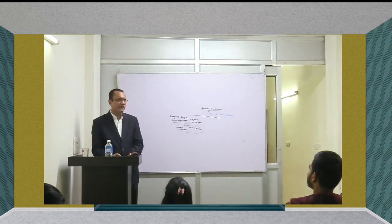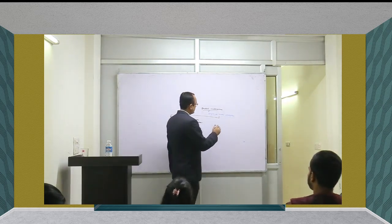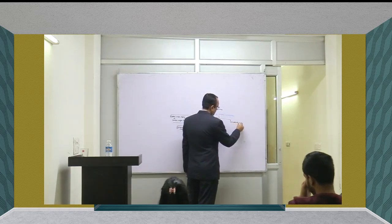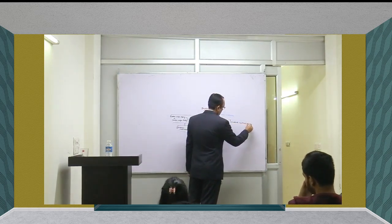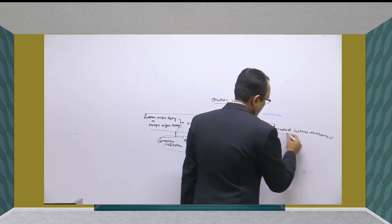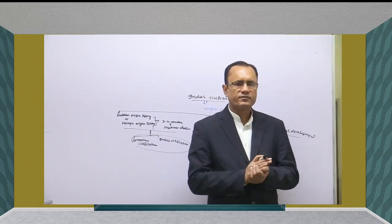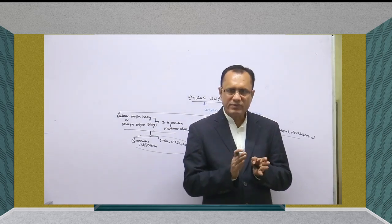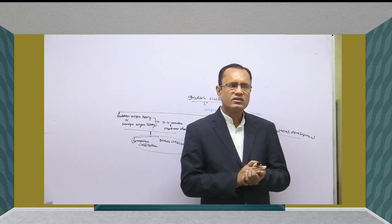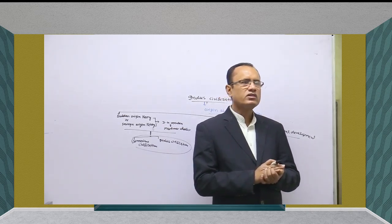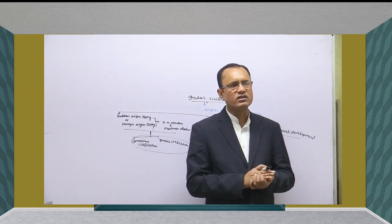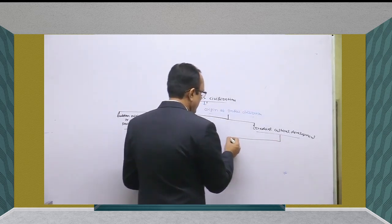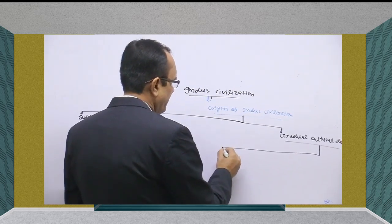So basically, both civilizations have fundamental differences. On the basis of that, scholars proposed that there was a gradual cultural development in the Indus region by indigenous people through the development of their own technological advancement. So Indus civilization originated from indigenous people through gradual cultural development — it was the product of gradual cultural development. For understanding this, we have to study some important phases of cultural development.